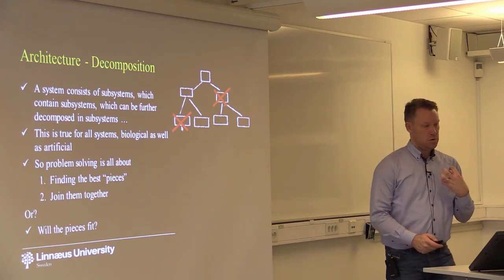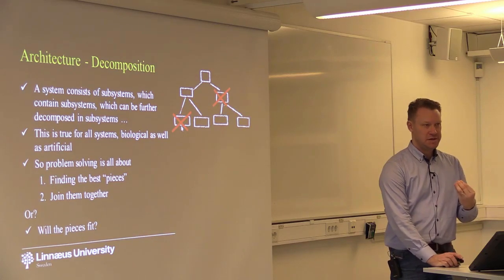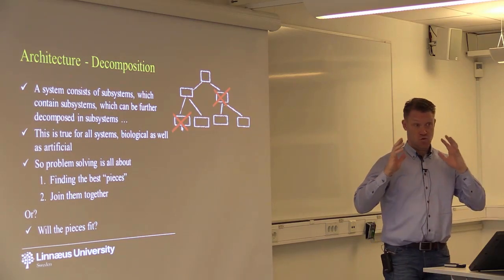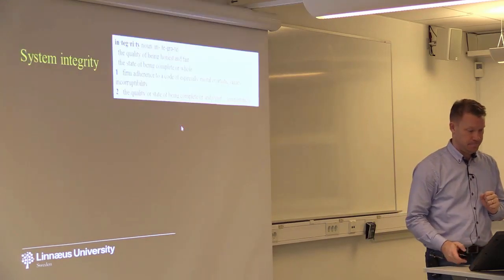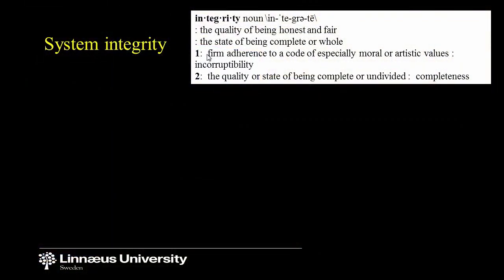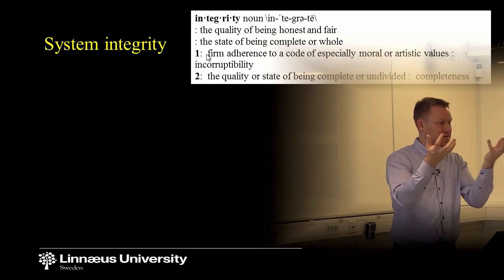What we're talking about here is something called integrity — system integrity. Making decisions before decomposition is a way to achieve system integrity. In the dictionary: 'firm adherence to a code of especially moral or artistic values.' Translated to software: think of your subsystems — if they adhere to the decisions we made before we decomposed them, it's more likely that they can co-exist when we put them back together.